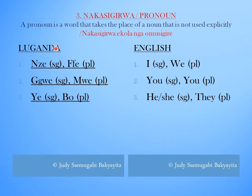For example: Mze (singular) — I. Fe (plural) — We. Gwe (singular) — You.